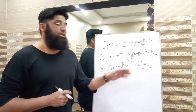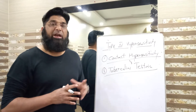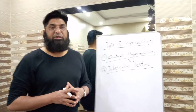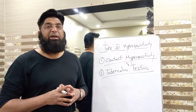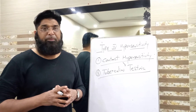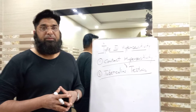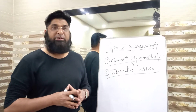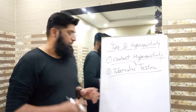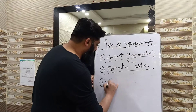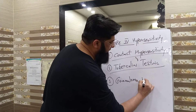On this basis, type 4 is also called delayed hypersensitivity reaction. There is more involvement of macrophages in tuberculin testing along with CD4 helper T cells. Number 3: granuloma type hypersensitivity.